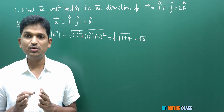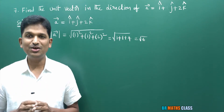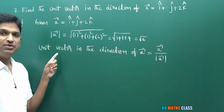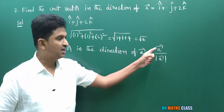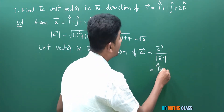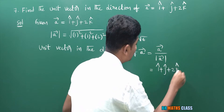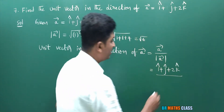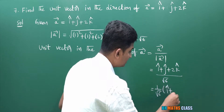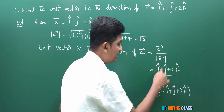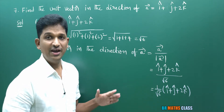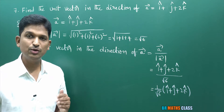I got magnitude of a⃗ as root 6. The formula to calculate unit vector along the direction of a⃗ is a⃗ divided by magnitude of a⃗. Here a⃗ is i cap plus j cap plus 2k cap, divided by root 6. This is the unit vector along the direction of a⃗. I hope you understand this solution. Now we will move to next question.